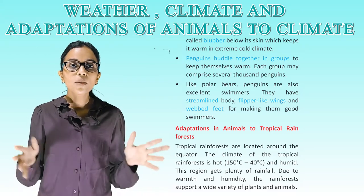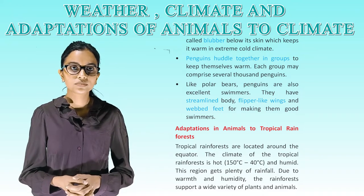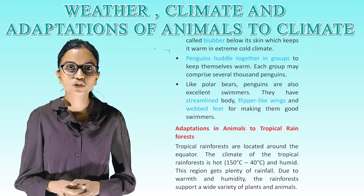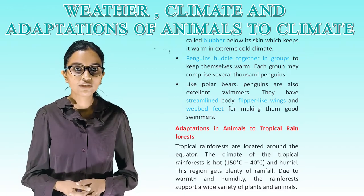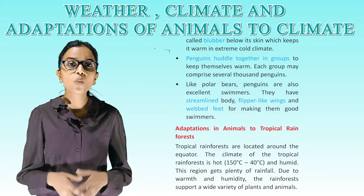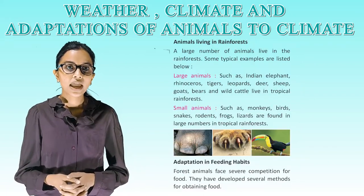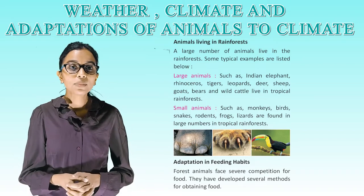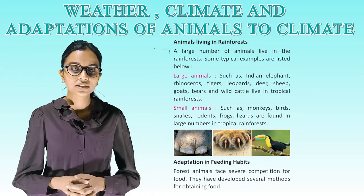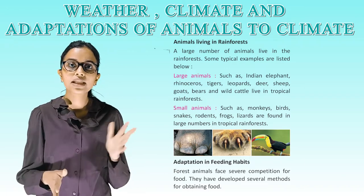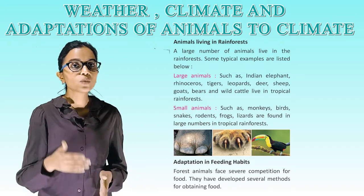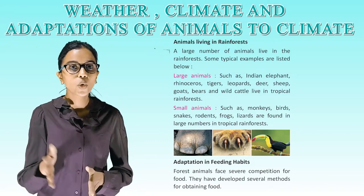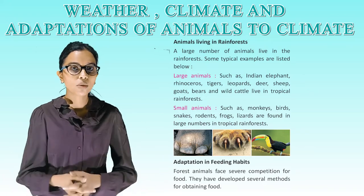Adaptation in animals to tropical rainforests: tropical rainforests are located around the equator. The climate of the tropical rainforest is hot (15°C to 40°C) and humid, and this region gets plenty of rainfall. Due to warmth and humidity, the rainforest supports a wide variety of plants and animals. Large animals such as Indian elephant, rhinoceros, tigers, leopards, deer, sheep, goats and wild cattle live in tropical rainforests. Small animals such as monkeys, birds, snakes, rodents, frogs and lizards are found in large numbers.